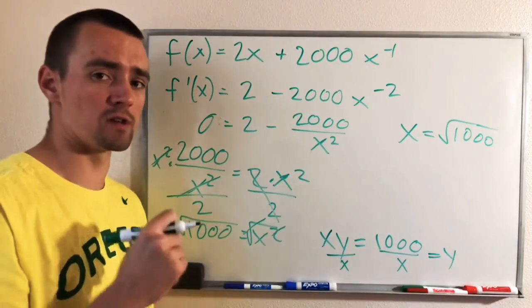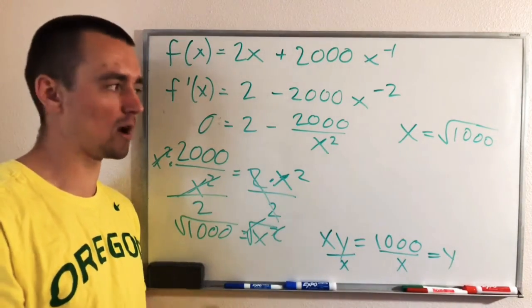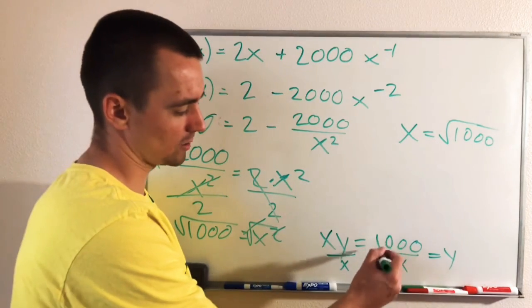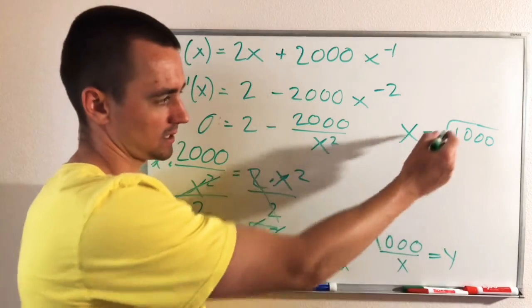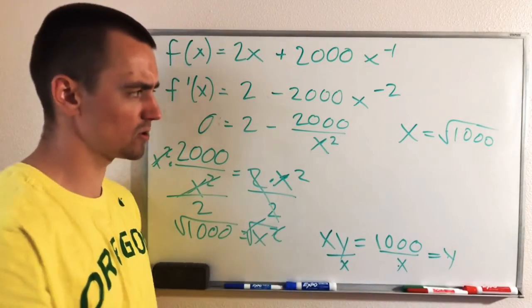So remember, we were trying to find the dimensions of the rectangle. So we also need to figure out what Y was because Y is the other dimension of this rectangle. Well, to do that, we already know Y equals 1,000 over X. So we can just take this X, plug it in here, and then I'll tell us what Y would be.